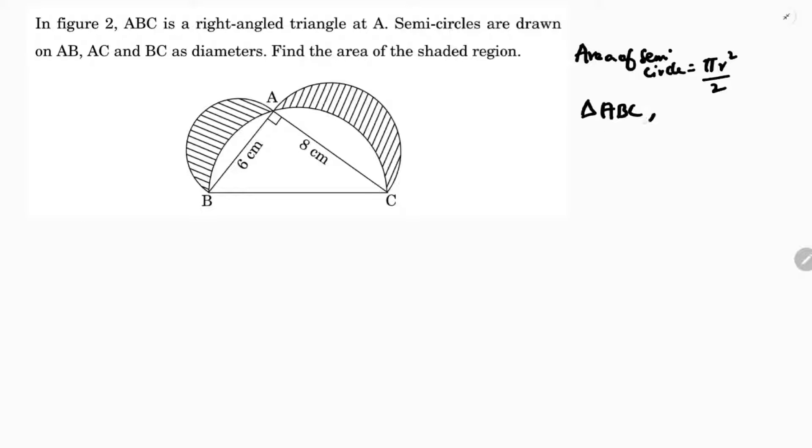In triangle ABC, if I apply Pythagorean theorem, hypotenuse is BC. BC square is AB square plus AC square. So BC square equals 6 square plus 8 square. BC square is 36 plus 64. So BC is under root 100. BC is 10 centimeters.